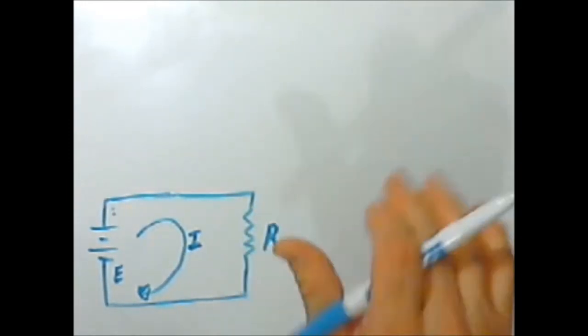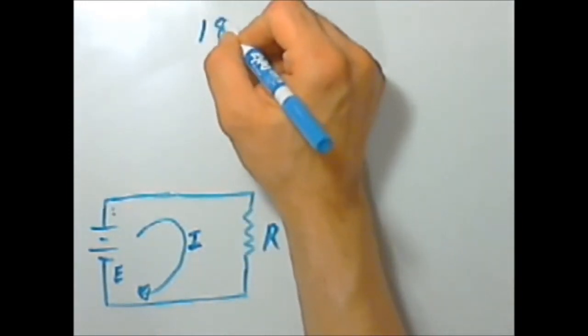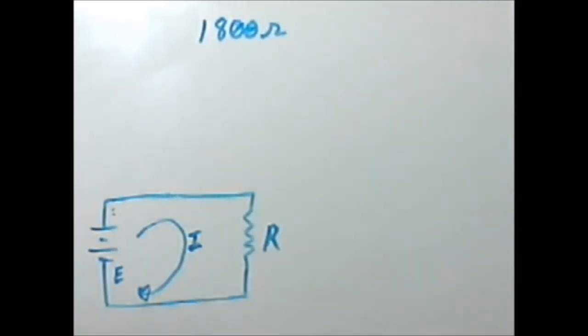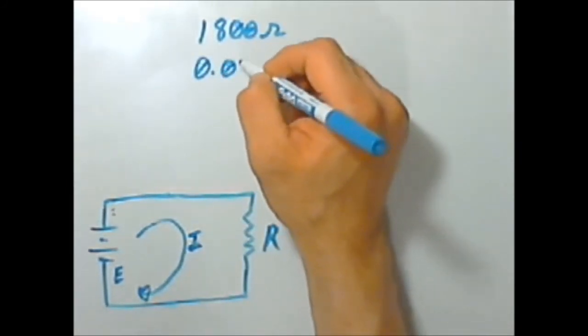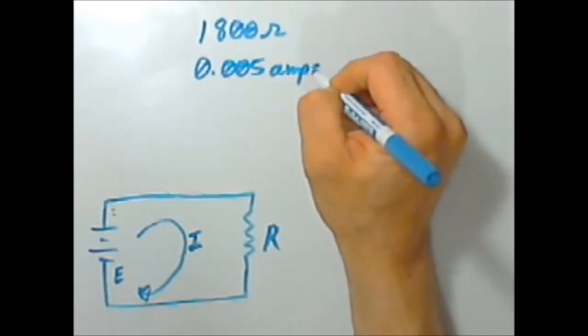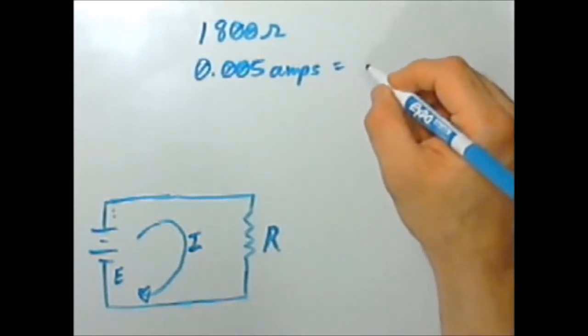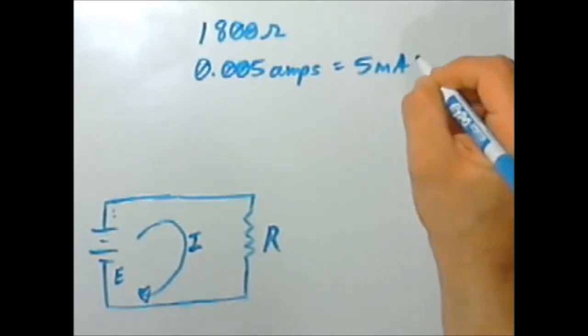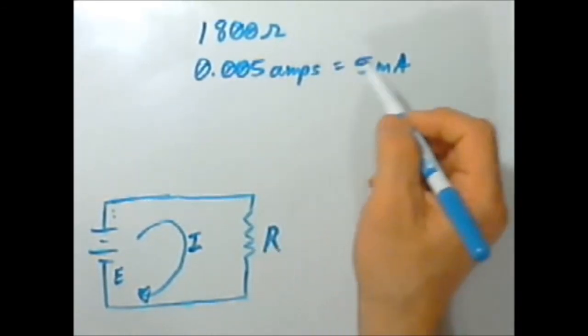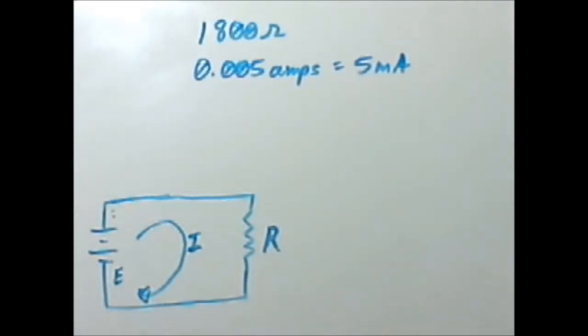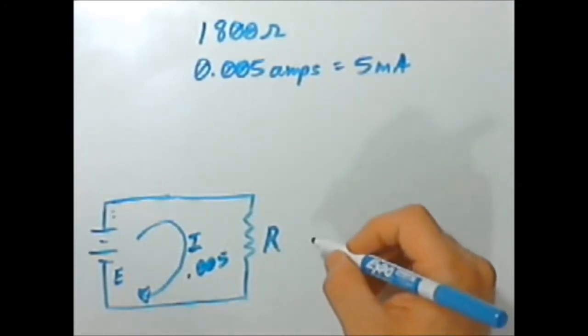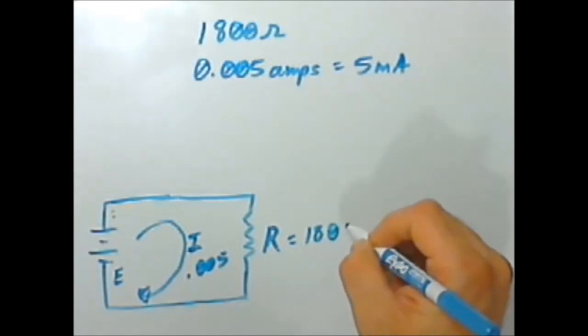Final example here, a circuit has a resistance of 1800 ohms. And that 1800 ohms is pulling a current of 0.005 amps, which is the same thing as five milliamps. So one milliamp is one one thousandth of an amp, just FYI. Anyway, what we want to know is how much voltage are we applying to get this 0.005 amp through 1800 ohms.